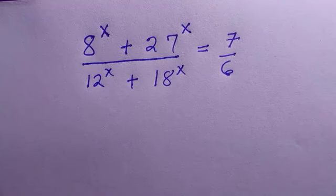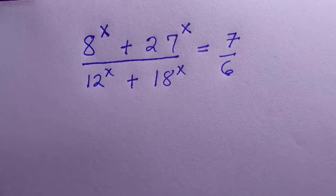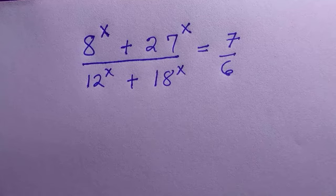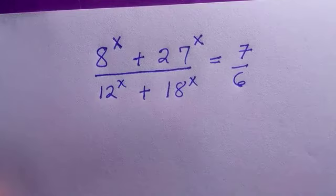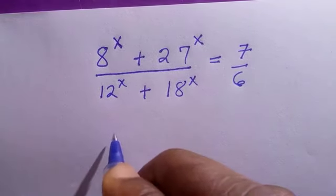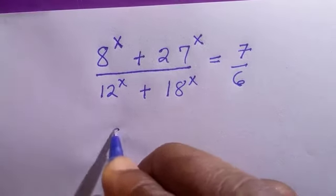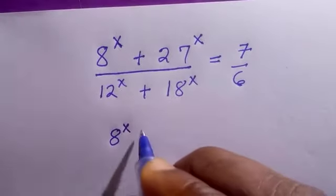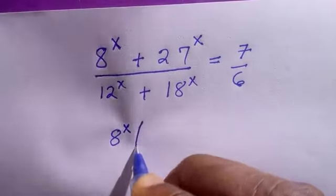Welcome to another video. In this system of exponential equations, 8 to the power x plus 27 to the power x, all divided by 12 to the power x plus 18 to the power x, equals 7 over 6. Let's see how to solve for x. All thanks to Prem Newton for formulating this problem.